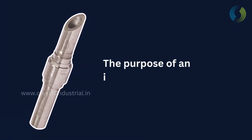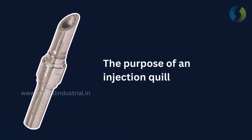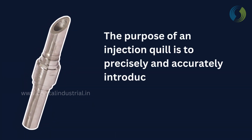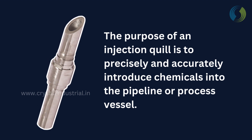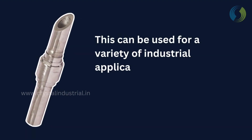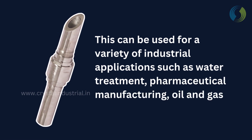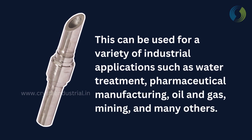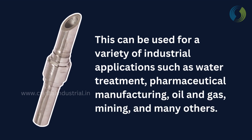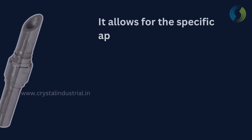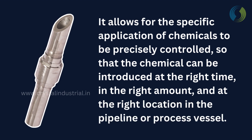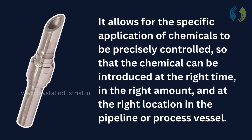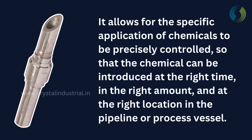What is the purpose of an injection quill? The purpose of an injection quill is to precisely and accurately introduce chemicals into the pipeline or process vessel. This can be used for a variety of industrial applications such as water treatment, pharmaceutical manufacturing, oil and gas, mining, and many others. It allows for the specific application of chemicals to be precisely controlled so that the chemical can be introduced at the right time, in the right amount, and at the right location in the pipeline or process vessel.